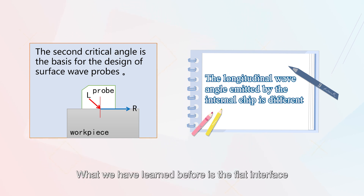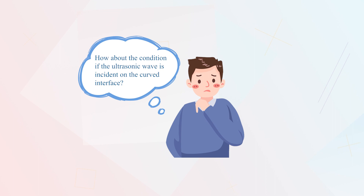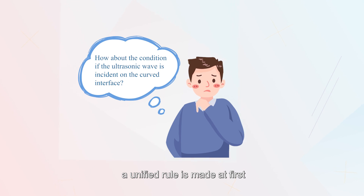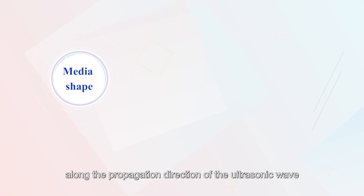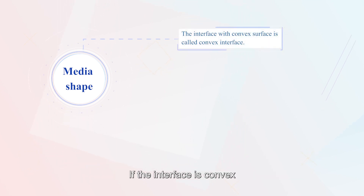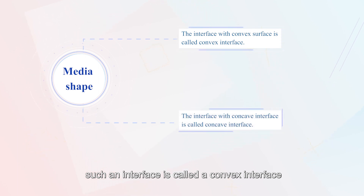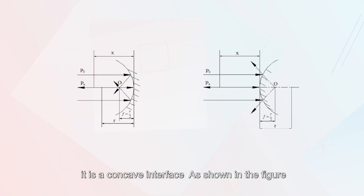What we have learned before is the flat interface. How about the condition when the ultrasonic wave is incident on a curved interface? For the convenience of discussion, a unified rule is made first. We observe the shape of the second medium along the propagation direction of the ultrasonic wave. If the interface is convex, it is called a convex interface. On the contrary, it is a concave interface, as shown in the figure.